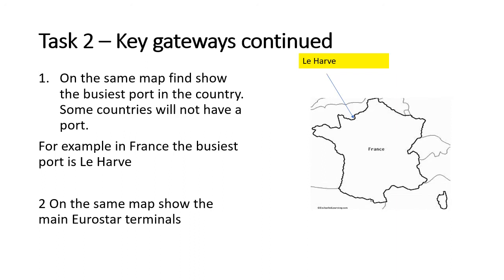Then you find the busiest port in each country and do exactly the same thing. In France, the busiest port is Le Havre, and you label it in the correct area where Le Havre is. You do the same for every country in Europe. Clearly, countries that are landlocked — such as Switzerland and Austria — will not have ports. So for a port, you clearly need to have a coast.